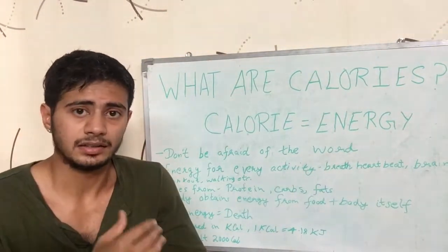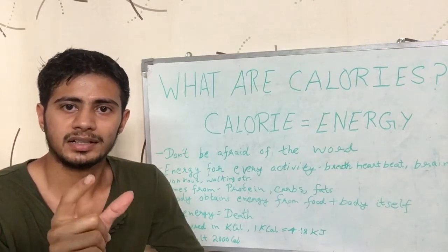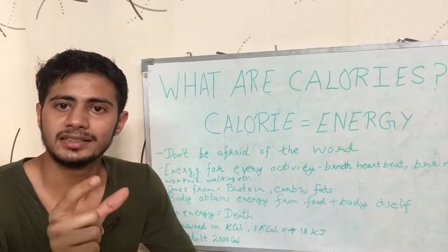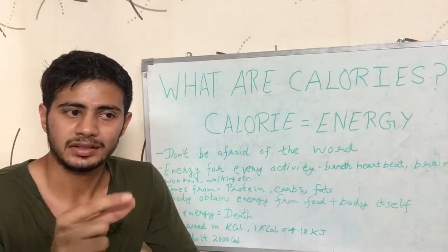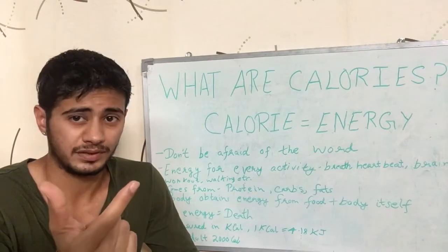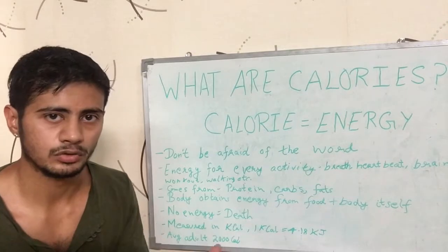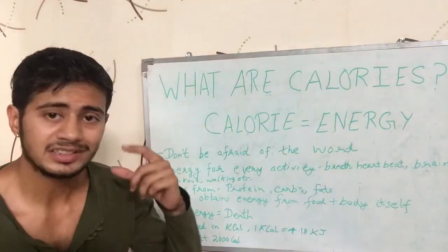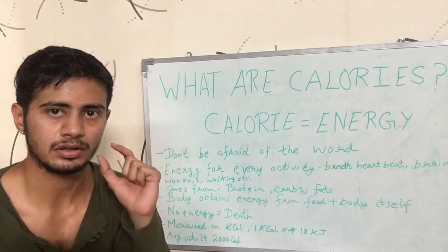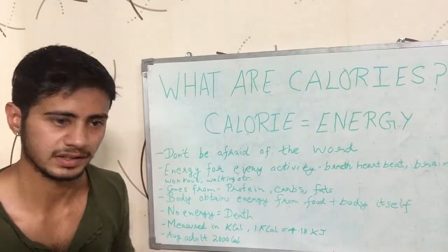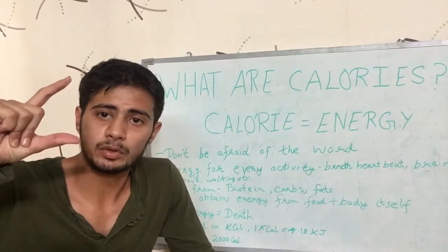Energy is measured in kilocalories, although it is commonly said as 'calorie' for short. One kilocalorie is equal to 4.18 kilojoules — you may have heard of kilojoules in school. So one calorie equals 4.18 kilojoules. When someone says 'calorie,' they mean kilocalories; a simple individual calorie does not have much significance in this context.